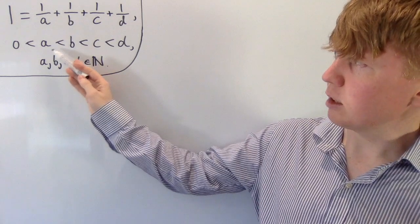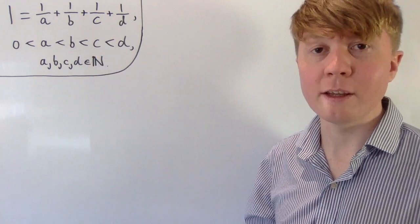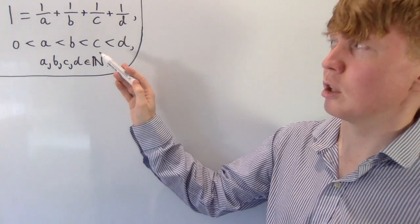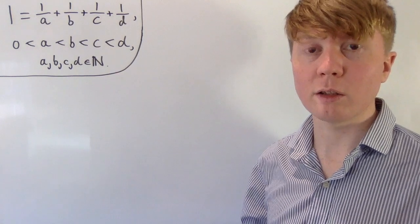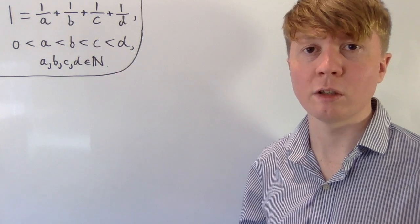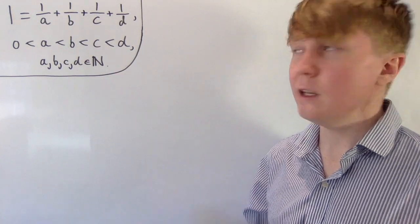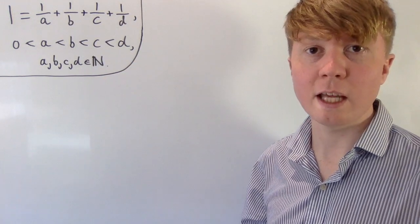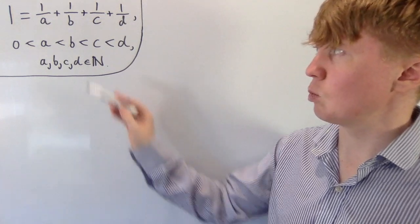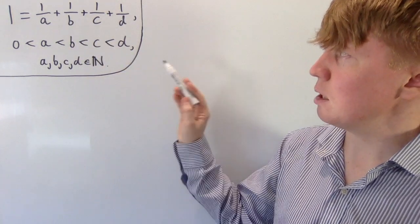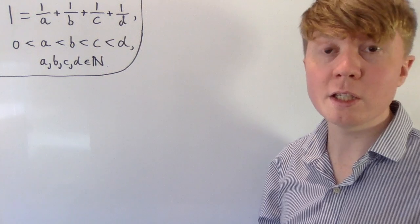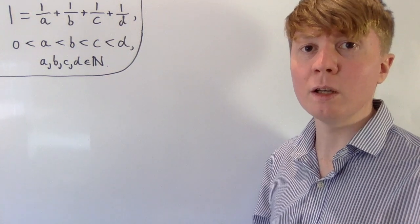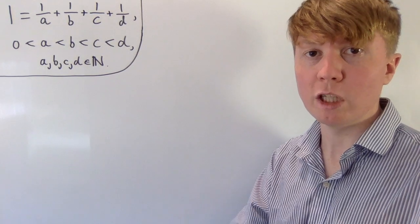We'll start by considering the smallest integer a — we've just put them in an arbitrary ordering here. If a is our smallest integer, then one over a is actually going to be our largest fraction contribution. And because a is smaller than b, c, and d, let's imagine we take a to be quite big, say a is five, so our fraction is one-fifth. Then b, c, and d are all bigger than this, meaning one over b, one over c, one over d would all be less than one-fifth, and you can imagine the sum would be too small — it wouldn't be able to reach one.